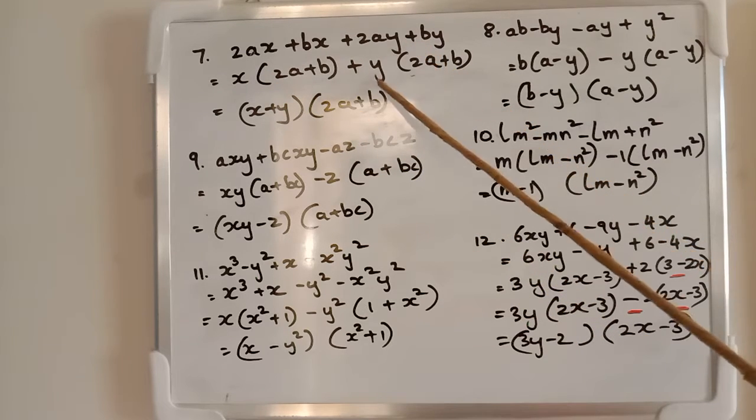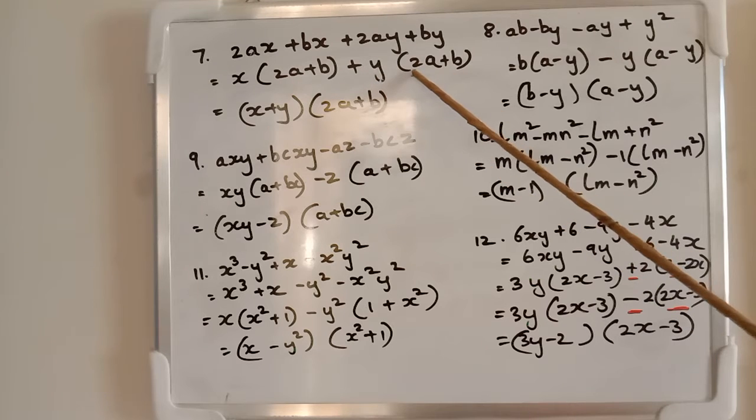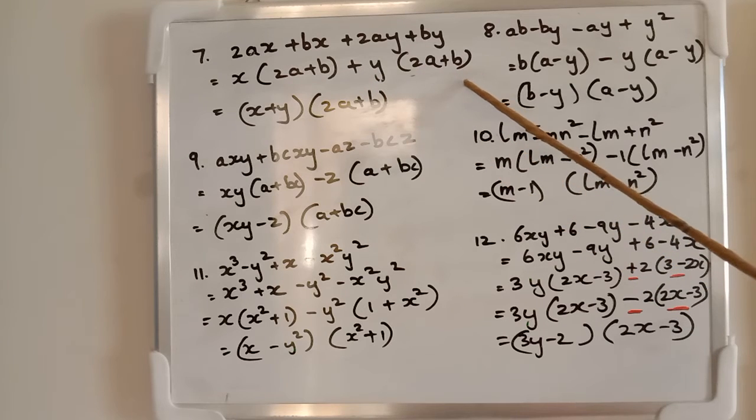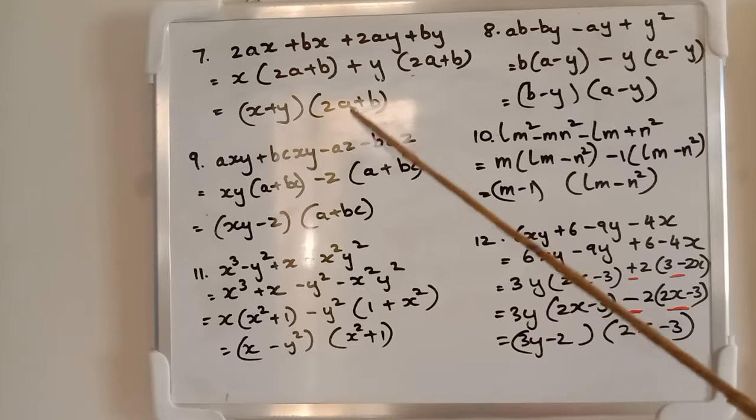Here what's common? y is common. Take it out, keep 2a + b inside. What do we get now? (x + y)(2a + b).